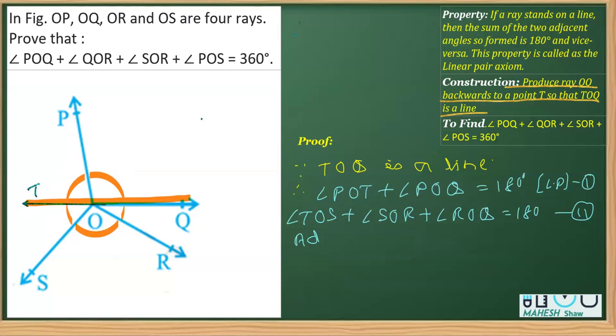Now in the next step, we'll be adding these two equations - that is, adding one and two. So if I add these equations, what we get: angle POT - I'm adding vertically - plus angle TOS plus angle POQ plus angle SOR and plus angle ROQ. You can see that if you add the right-hand side, you'll get 360 degrees.